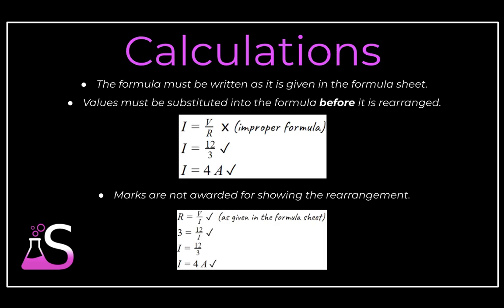Then when performing calculations, once again you must start with the formula as it is written. So you may not automatically rearrange the formula. So if the formula is given as R equals V over I, you must write it down as R equals V over I, then substitute the values as they are given and then write the answer. Note that you are not given a mark for showing that rearrangement so it is not entirely necessary.